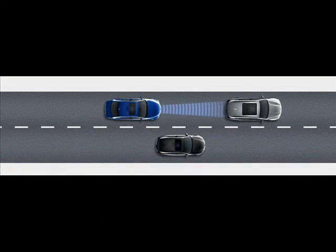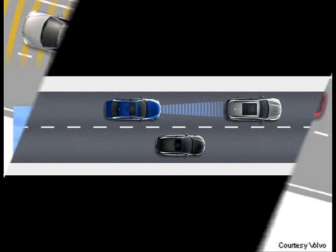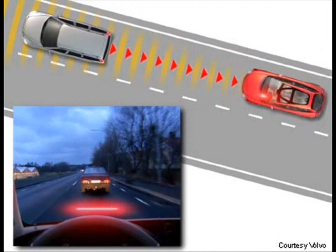Collision warning systems utilize a radar or laser to detect a possible collision with other objects or vehicles. This system could be set up to apply the brakes when a possible collision is identified. There are many secondary applications derived from this base system.